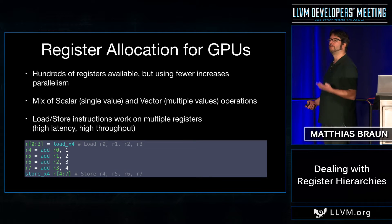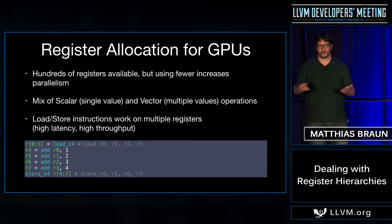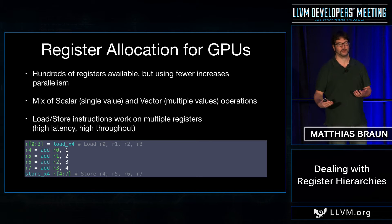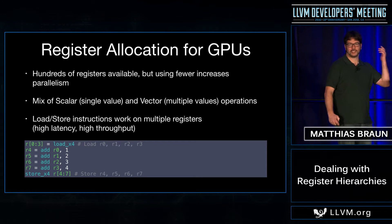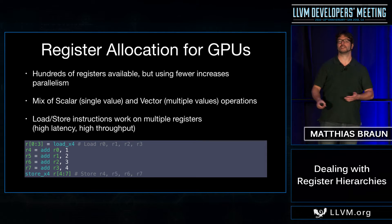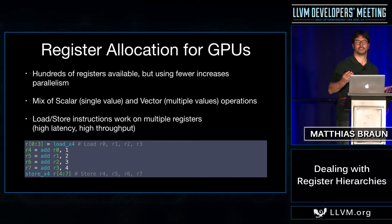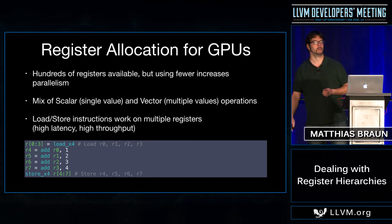The load loads four registers and they must be in consecutive order — that's one of the constraints you typically find. You need encoding space to represent multiple registers in an instruction, and usually we don't want to make instruction encodings too big, so we cannot just encode any arbitrary four registers. In practice it's often way more than four — I've seen loads of 16 or more registers in a single instruction. Most architectures encode just the first register and say we will load the next consecutive N registers. This of course gives us a constraint for the register allocator — they need to be in order.